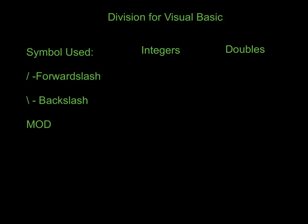Division is a little bit different for Visual Basic in the sense that with integers, there are three different things you can do. Doubles is pretty consistent. Let's take a look at the symbols we're using. You have the traditional forward slash, which you're used to with division, and that's the main one we use with doubles. Because doubles have decimal point numbers, we can just do traditional division with that. The backslash is used with integers.